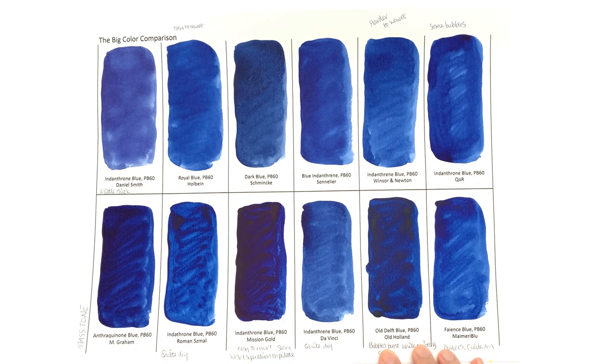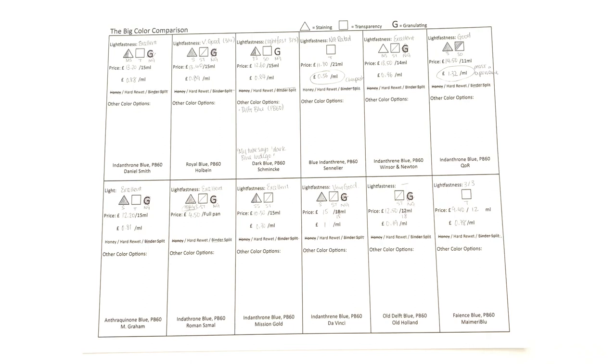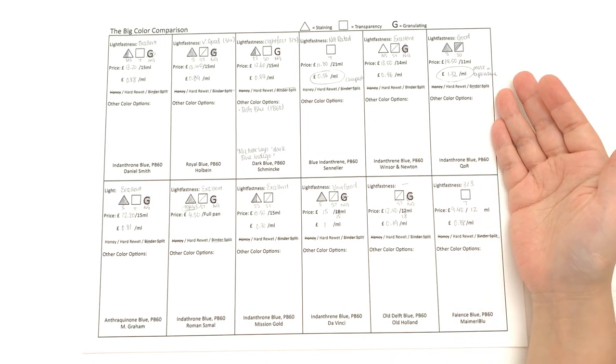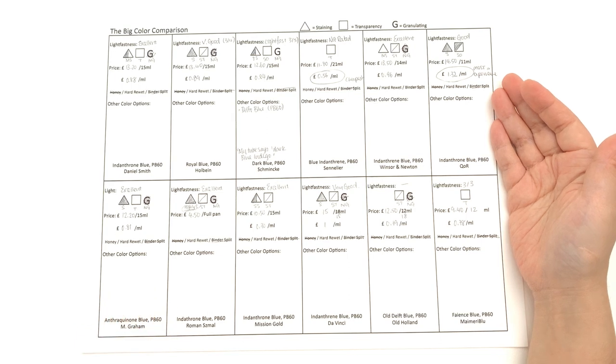Let's look at the prices, and these prices are all UK prices that have taken from Jackson's wherever I can, so the prices will be different if you live in another country. For us, QoR is still the most expensive one, and with the bubbling I probably wouldn't say that it's worth paying the extra if it's got some problems with its performance.